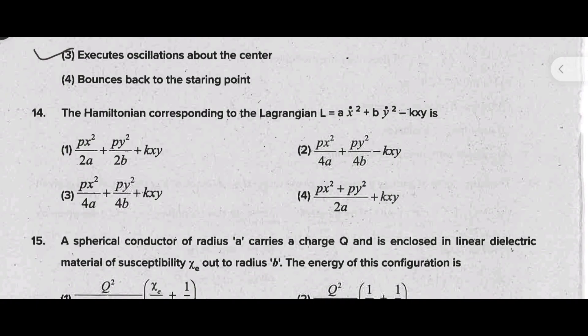The Hamiltonian corresponding to the Lagrangian L = A X dot square plus B Y dot square minus KYX is - answer is option 3: P_X square by 4A plus P_Y square by 4B plus KXY is the right answer.